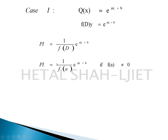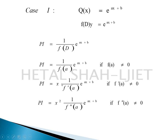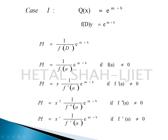If f(a) = 0, then put x in the numerator and take the derivative f'(D) in the denominator, then substitute a in place of D, giving x / f'(a). The condition is f'(a) must not equal zero. If f'(a) = 0 again, multiply by x again giving x² in the numerator, and use the second derivative f''(D) in the denominator, substituting a in place of D. Continue this process until you get a non-zero value in the denominator.